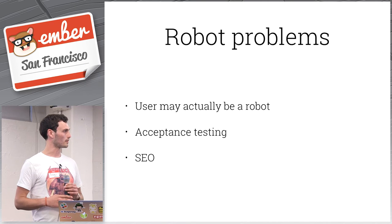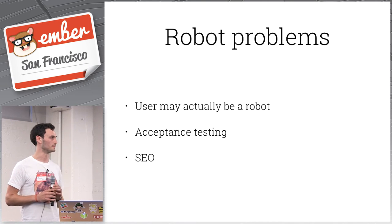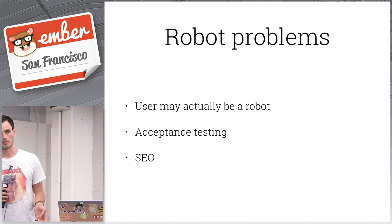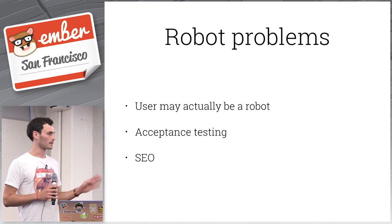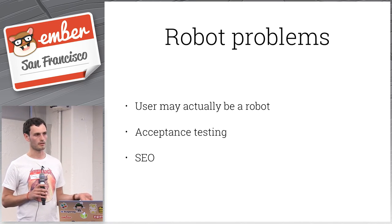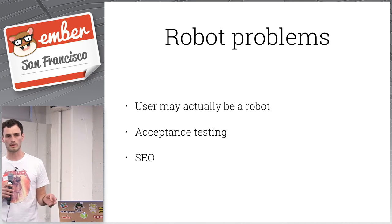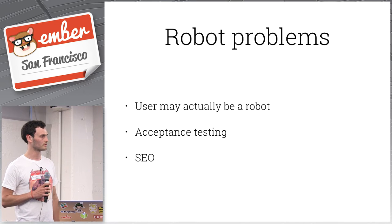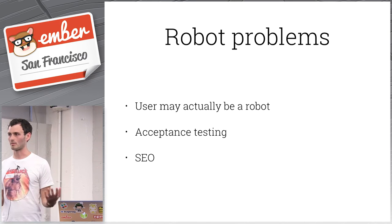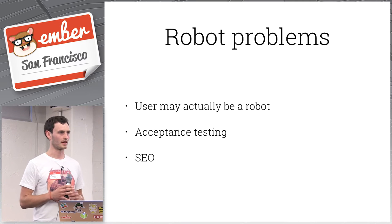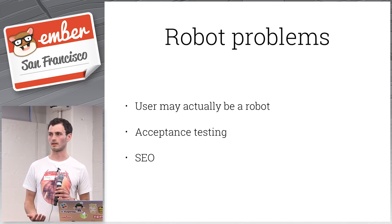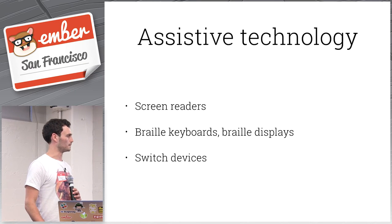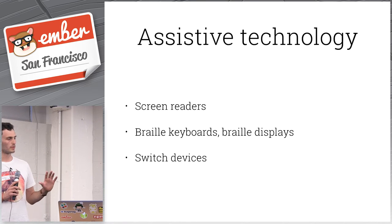One thing is that your user might actually be a robot. This is applicable to SEO, but acceptance testing is also a big piece of this. Using tools like Capybara, you can try to get tests passing and find you haven't set things up correctly. Being able to acceptance test your website is a good indication it's accessible because the robot can crawl it.